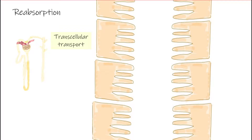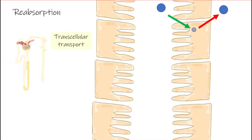Looking more closely at transcellular transport: some substances are in high concentration in the tubular fluid, so they can cross the apical membrane passively down their gradient, but then must be actively transported across the basolateral membrane into the interstitial fluid. Conversely, substances at low concentration in the tubular lumen must be actively transported across the apical membrane against a gradient, but can then passively cross the basolateral membrane.